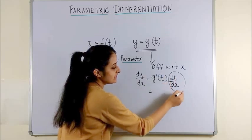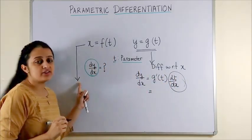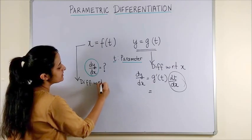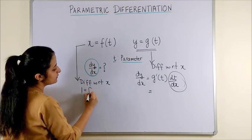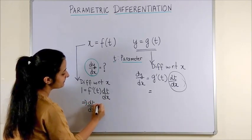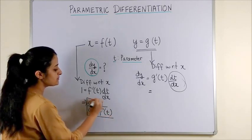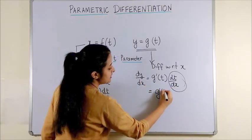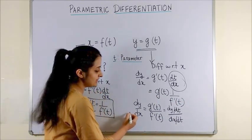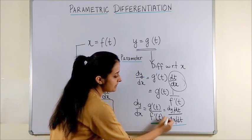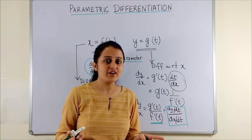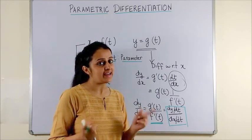Now let's check out what dt/dx is going to be. If we focus on x = f(t) and differentiate both sides with respect to x, we get 1 = f'(t) · dt/dx. So dt/dx = 1/f'(t). Substituting this value, we get g'(t) · (1/f'(t)), and this brings us to the final formula: dy/dx = g'(t)/f'(t), or simply dy/dt divided by dx/dt.